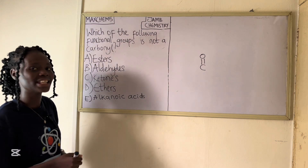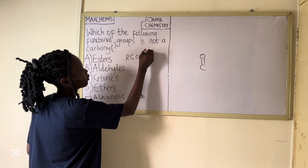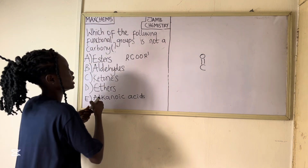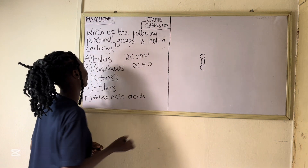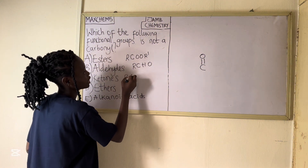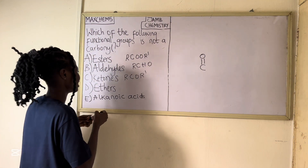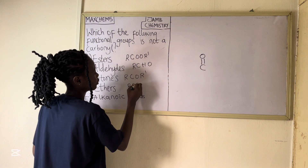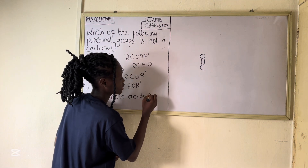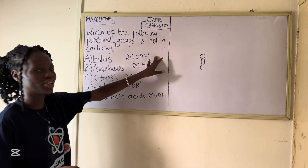Number one, we have the esters — the general formula for ester is R-COO-R'. Option B says aldehyde — the general formula for aldehyde is R-CHO. Option C says ketone — the general formula for ketone is R-CO-R'. Option D says ether — the general formula for ether is R-O-R'. Option E says alkanoic acid — the general formula for alkanoic acid is R-COOH.